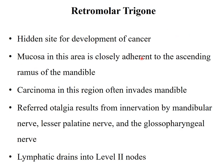The retromolar trigone is one important structure in the oral cavity — a usually hidden area which lies behind the wisdom tooth. This is a hidden site for the development of cancer. The mucosa in this area is closely adherent to the ascending ramus of the mandible, and carcinoma in this region often invades the mandible. Referred otalgia results from innervation by the mandibular nerve, lesser palatine nerve, and the glossopharyngeal nerve. The lymph node drainage is into the level 2 lymph nodes.